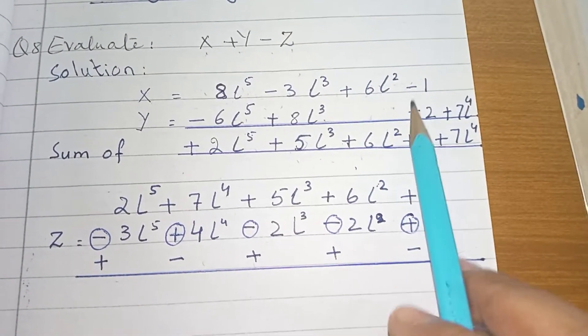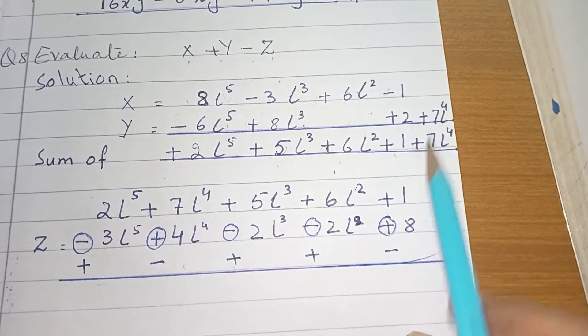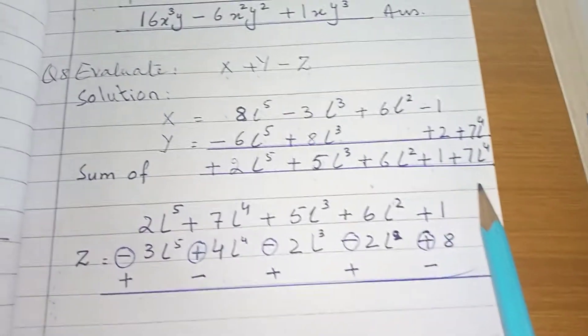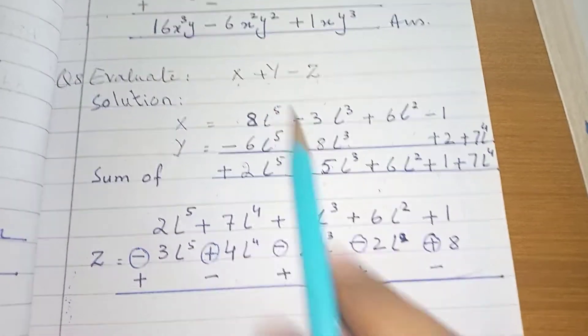Next one minus plus minus, 8 minus 3, 5L power 3 is left with plus sign. It is a bigger number. Now 6L power square is given, it's a single term, only one term, so as it is copied. Now minus plus minus, 2 minus 1, 1 is left with plus sign. Plus 7L power 4 is given, so as it is copied. Done first part, X plus Y.